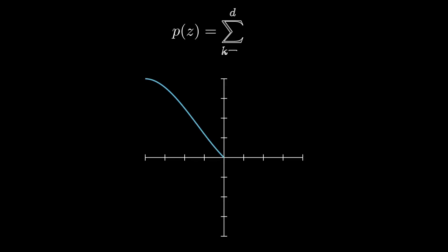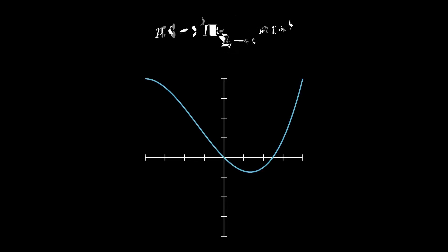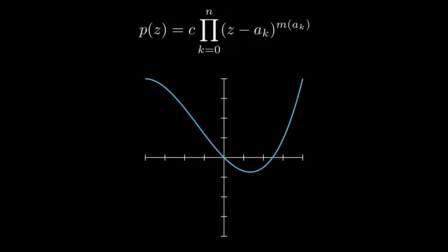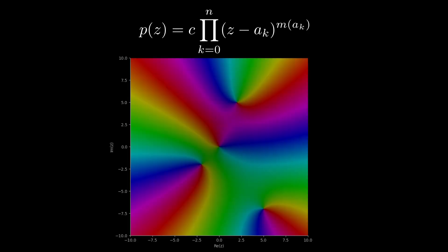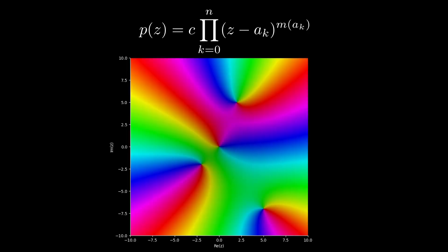Given any polynomial, we can factor out the zeros and get a product. Since some of the zeros can be complex numbers, it's better to plot the polynomial as a function on the complex plane. The color represents the argument and the brightness the magnitude.